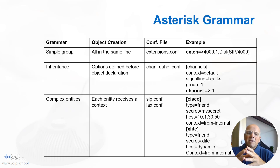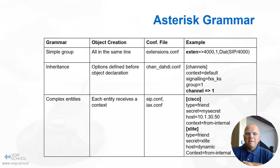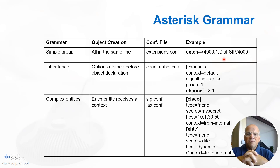The Asterisk grammar consists of three main components: simple groups, inheritance groups, and complex entities. Simple groups are defined by listing all objects on the same line in the extensions.conf file. As an example, you would write: extension 4000, one, Dial, SIP/4000.